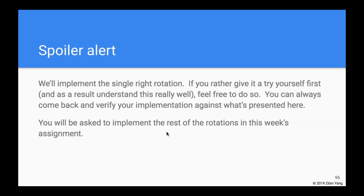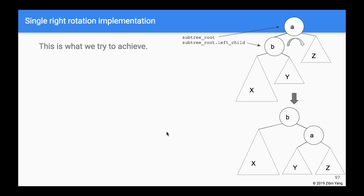For this week's assignment you'll implement all the remaining rotations. The single right rotation addresses the left-left case — this is one of the four cases — and we rotate right to bring the tree back into balance.